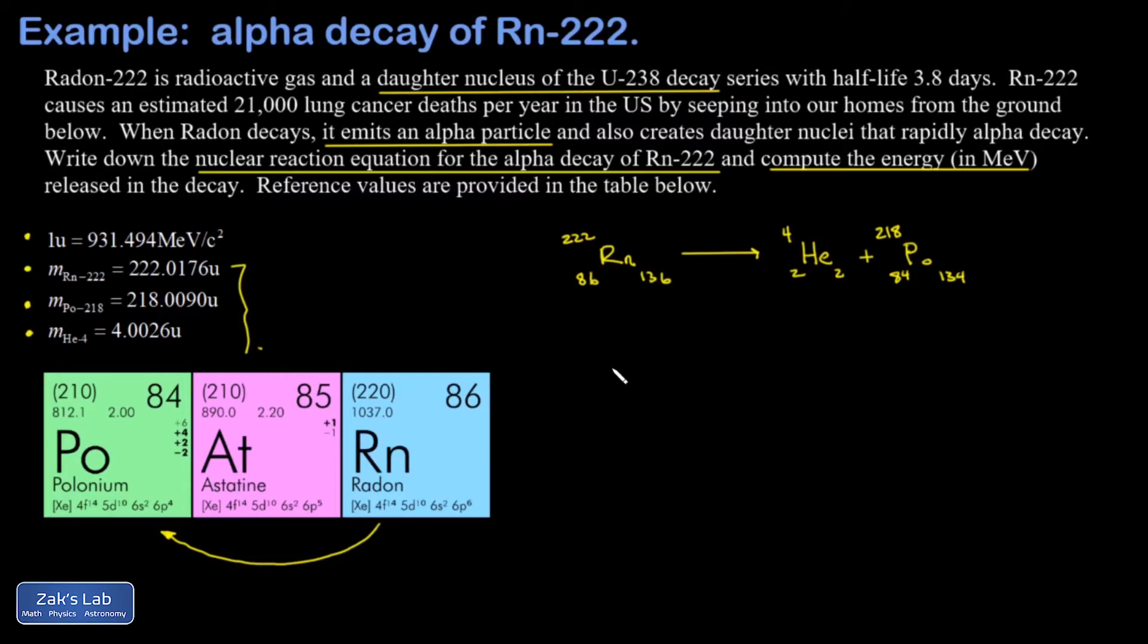You're going to find that there's some mass missing, and then we use E equals mc squared to compute the energy equivalent of that mass. Written in math, it looks like that.